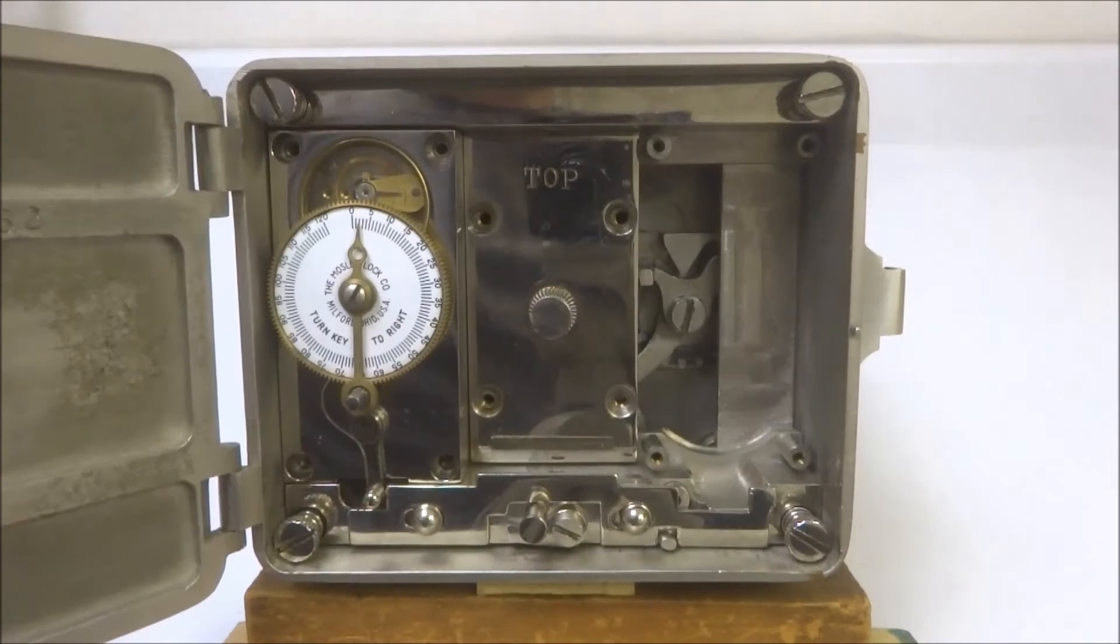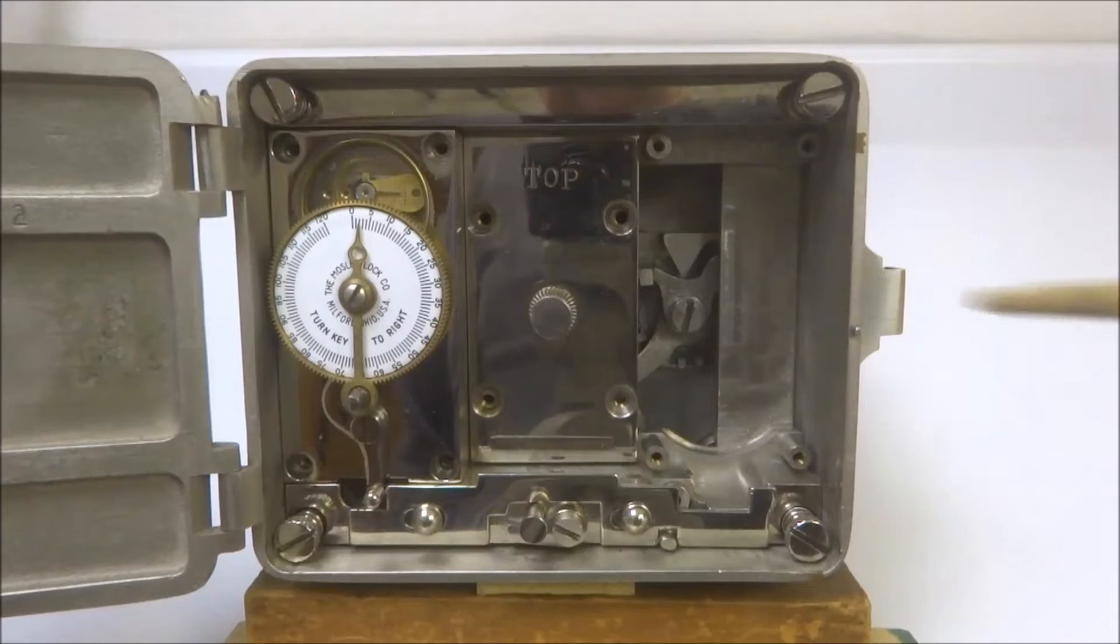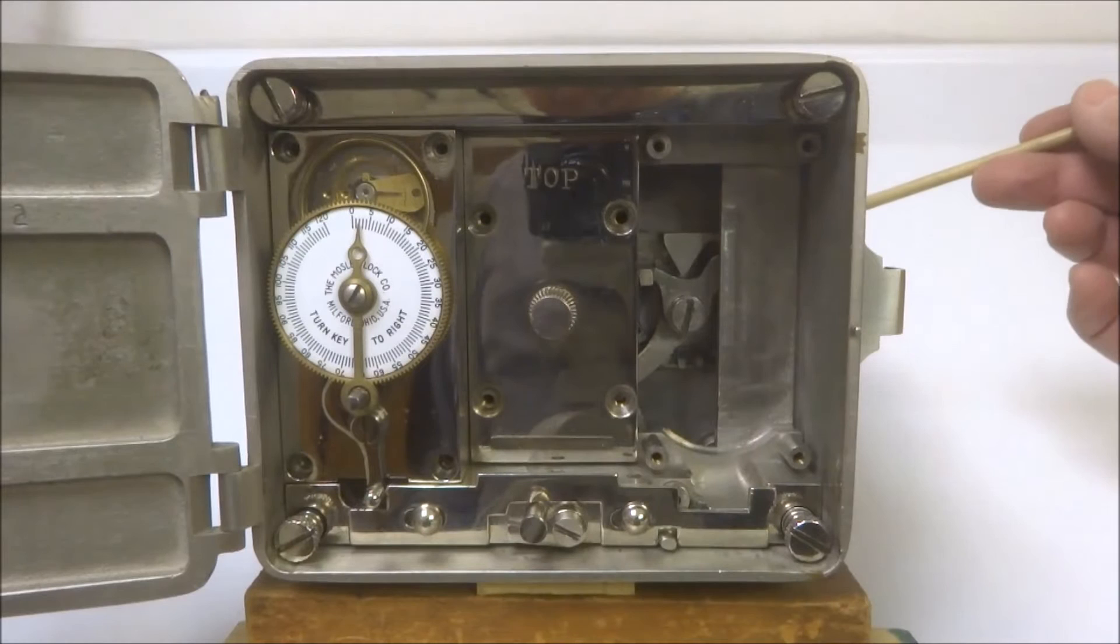Now what you have here is there normally would be two time locks, one here and one here. I removed one already for the demonstration. In this center section here you have the tumblers for the time lock because on the other side is a combination dial.